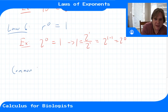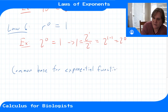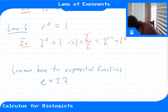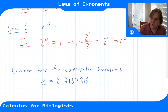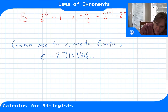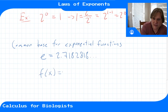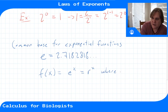The last thing to remember isn't a law but a common base for exponential functions: the number e, which is an irrational number approximately equal to 2.71828... It's a non-repeating, non-terminating decimal that goes on forever, and it's a common base in many scientific problems — we'll get into why once we cover the derivative. Functions that look like f(x) = e^x are so common that e^x is simply called 'the exponential function.'